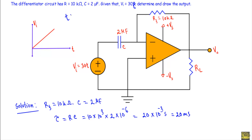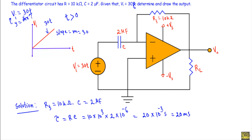When t is greater than zero, we apply a straight-line input vi equal to 30t. If we draw this input voltage, we get a straight line through the origin — comparable to y = mx — where the slope is 30 and x is t. So we are applying a ramp input vi equal to 30t.